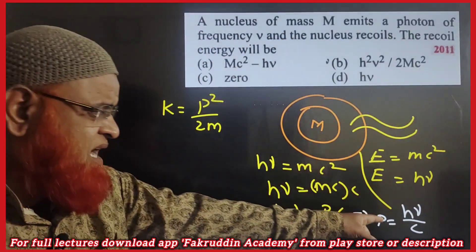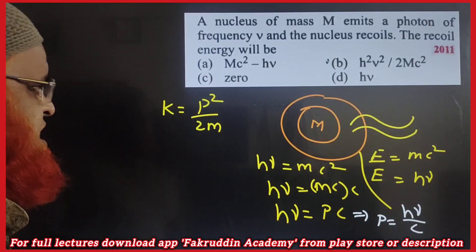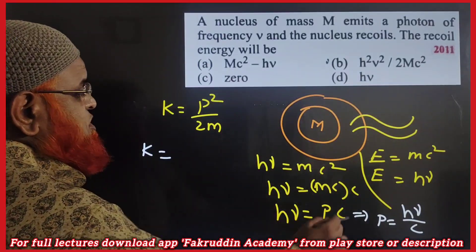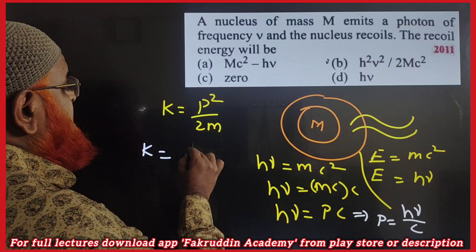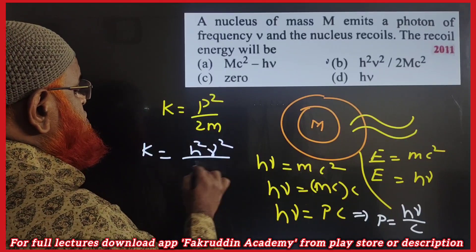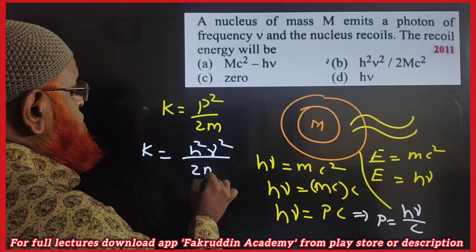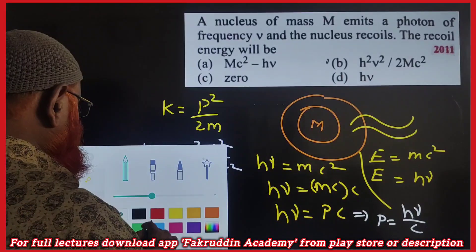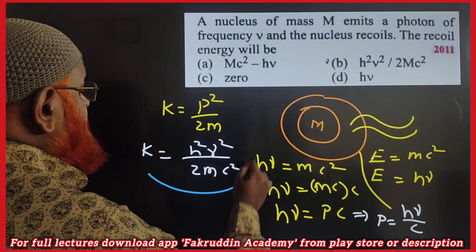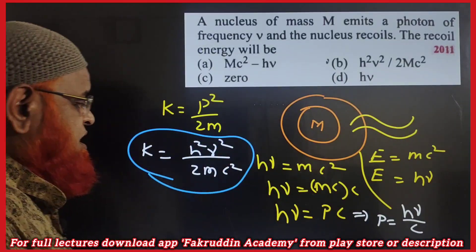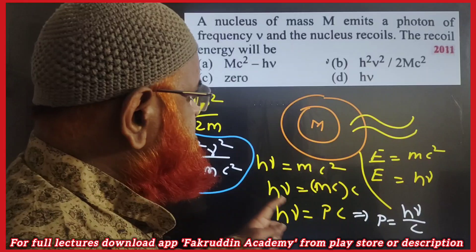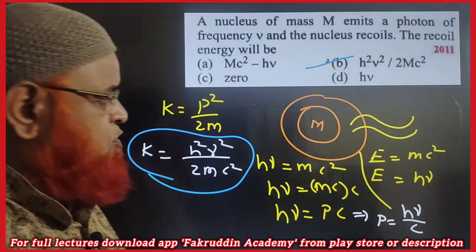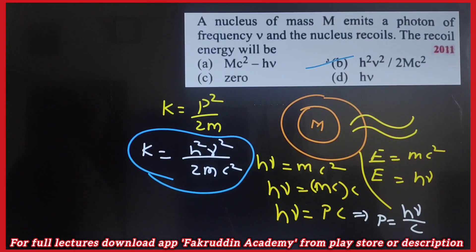Substituting p = hν / c into the kinetic energy formula P² / 2m, we get h²ν² / 2mc². So the final answer is h²ν² / 2mc², which is option B. Hope you have enjoyed this method of explanation — thank you very much.